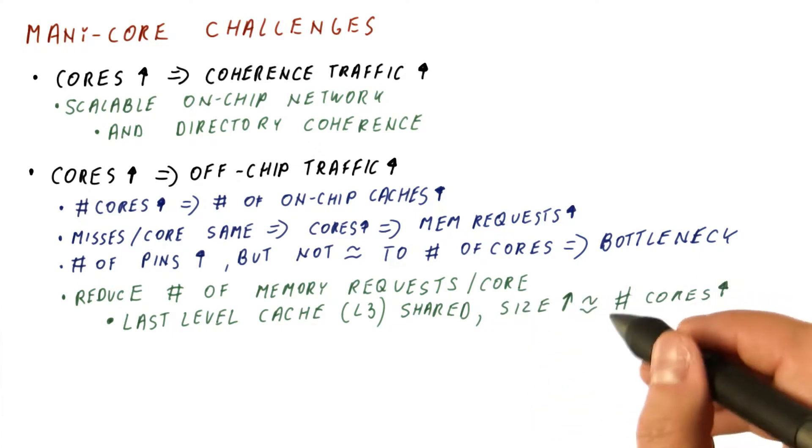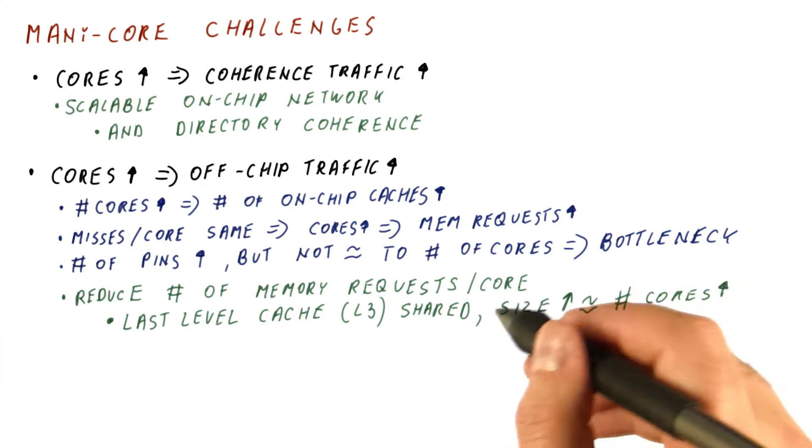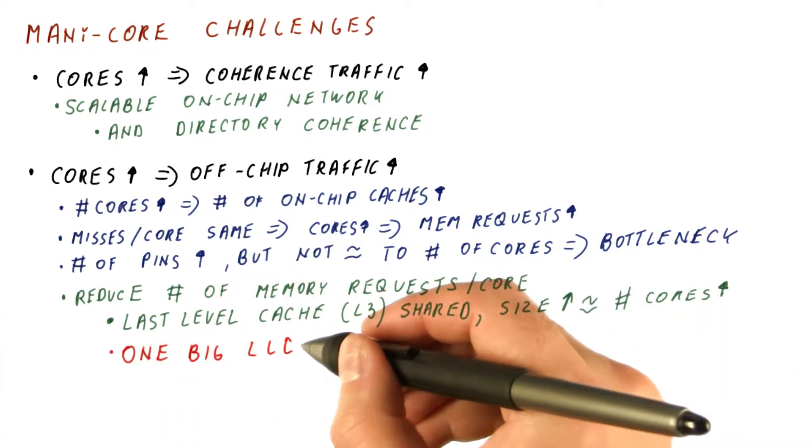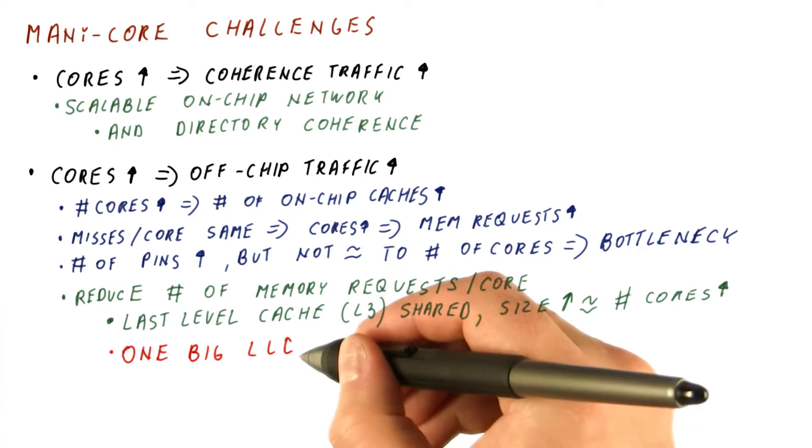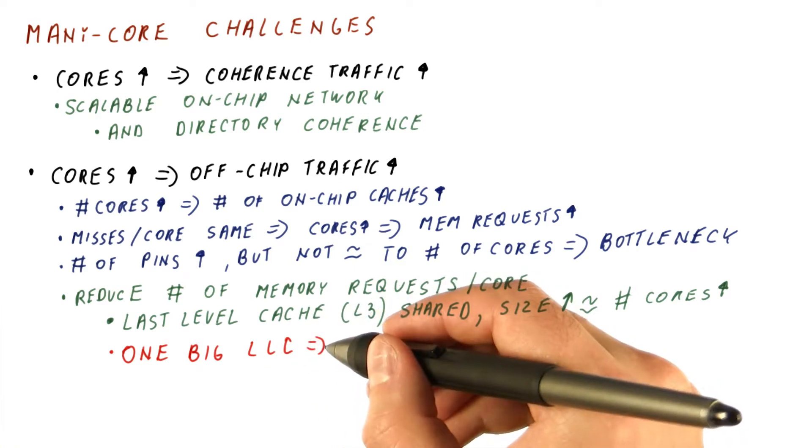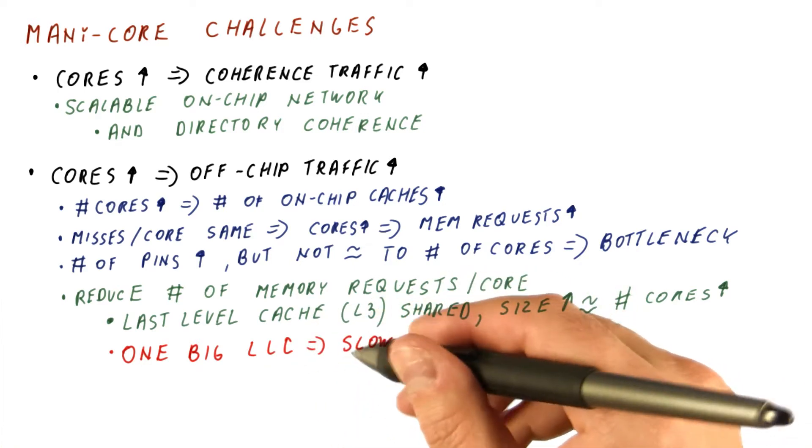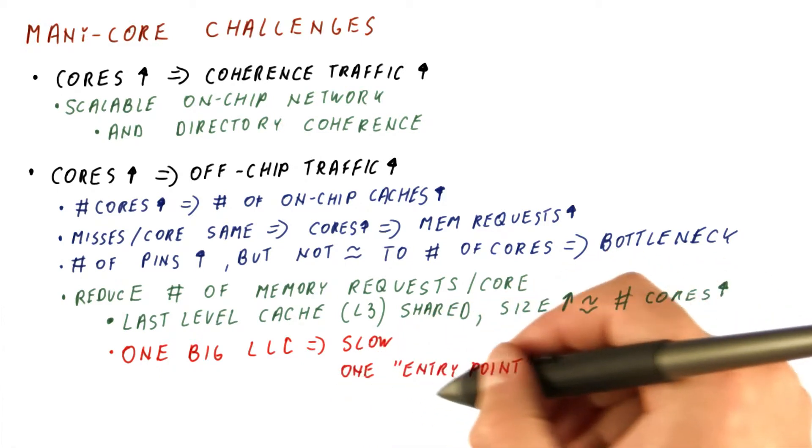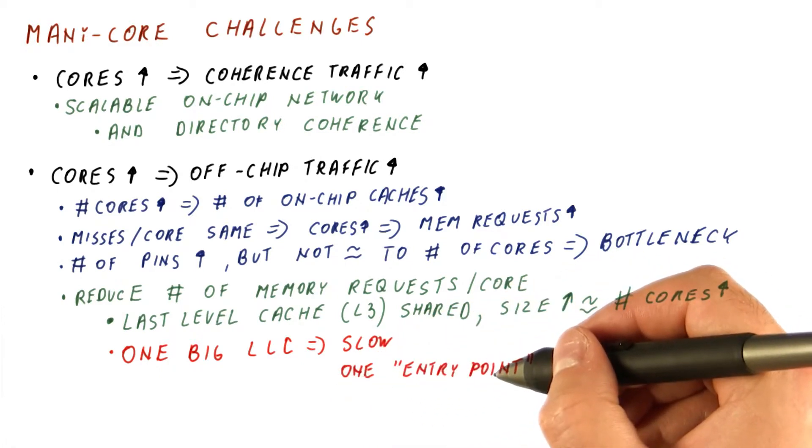So as we double the number of cores, we should at least double the size of the last level cache. But there is a problem to having one huge LLC like this. Such a large cache would be slow, and if it's really one single cache, it would have one entry point where we enter the address and expect the data out.